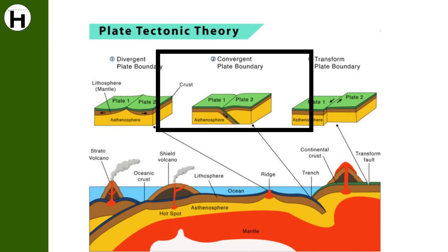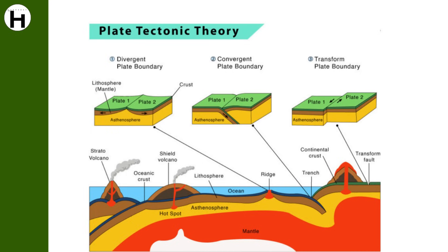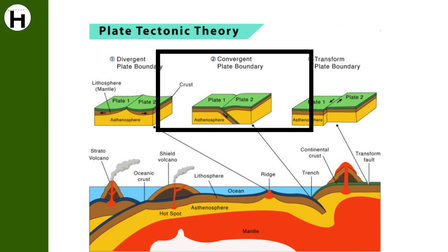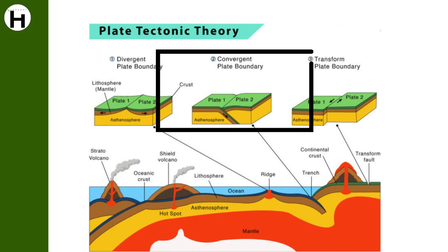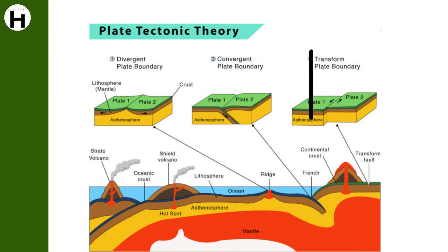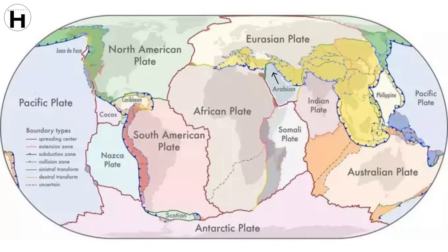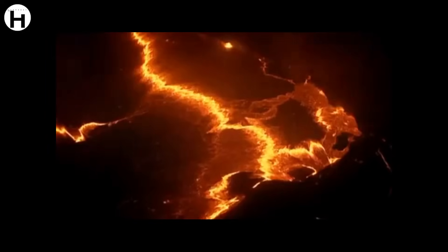When two plates come together, it is known as a convergent boundary. The impact of the two colliding plates buckles the edge of one or both plates up into a rugged mountain range, and sometimes bends the other down into a deep seafloor trench. The splitting of Africa as a result of the East African Rift will push the Arabian plate into the Eurasian plate, uplifting the seabed and turning the land into mountains, so new mountains can be seen in West Asia.